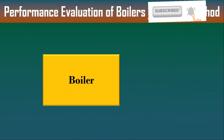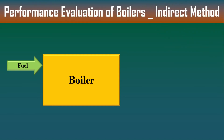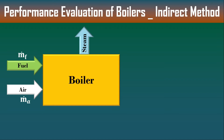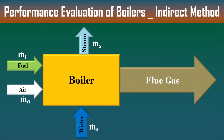Consider we have a boiler. To run the boiler, we have to supply fuel — that fuel may be solid fuel, liquid fuel, or gaseous fuel. The amount of fuel given to the boiler, let's consider Mf. For combustion, we have to supply air; the amount of air supplied, let's take Ma. The purpose of the boiler is to generate steam. To generate steam, we have to supply water; the amount of water supplied equals the amount of steam generated. After combustion of fuel and air, the dry flue gas comes out from the boiler, and in this flue gas we have various heat losses carried away from the boiler.